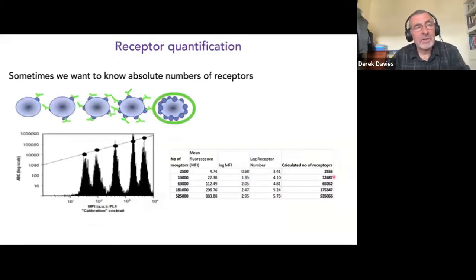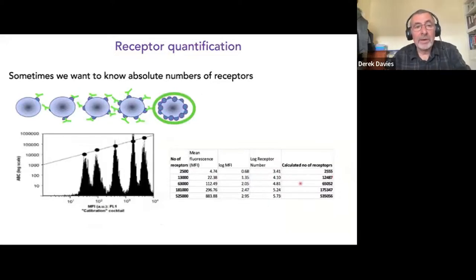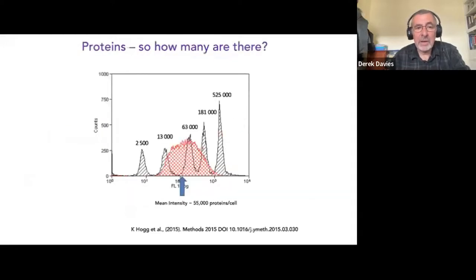Flow cytometry can also quantitate signal intensity, which is important for pharmacological assays. You might want to know how many receptors are on a cell. Using beads with known numbers of binding sites — from high to zero — run on the flow cytometer, we can construct a standard curve of fluorescence intensity versus receptor number. Running our sample against this curve gives us the actual number of receptors. We can then treat cells with a compound and measure whether there is an upregulation or downregulation of receptor number.